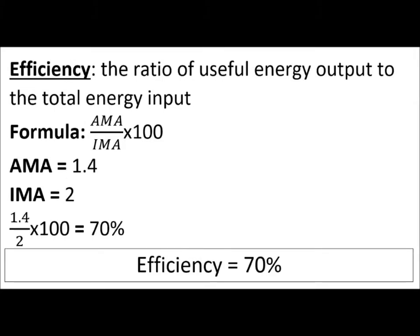Now that we have the ideal and actual mechanical advantage, we can calculate the efficiency. To calculate efficiency, we take the actual mechanical advantage and divide it by the ideal mechanical advantage. In this example, it's two divided by 1.4, so the efficiency is 70%. Efficiency at 70% could signal many things.